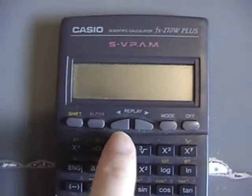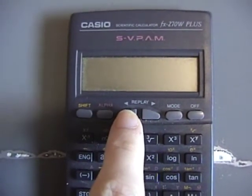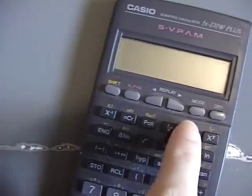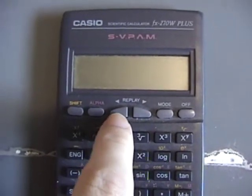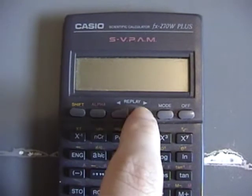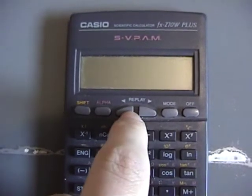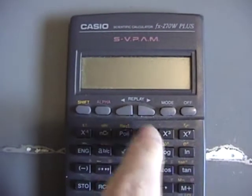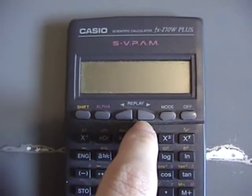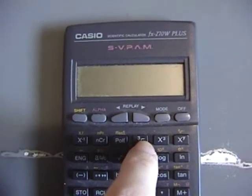You can see these are the calculators that made mainstream the replay feature where you could see a formula you had entered after you had already executed it. The MS series of course improved on this. These ones, you can only replay the very last calculation you made. But the MS series keep the last five or so calculations in memory. So you can scroll up through all the things you've done the last few times. So these are kind of cool calculators.